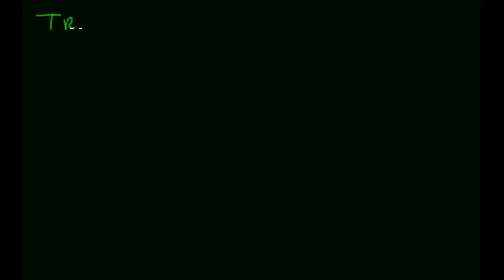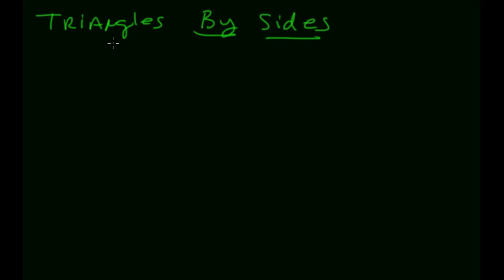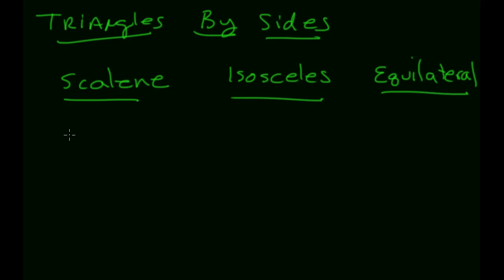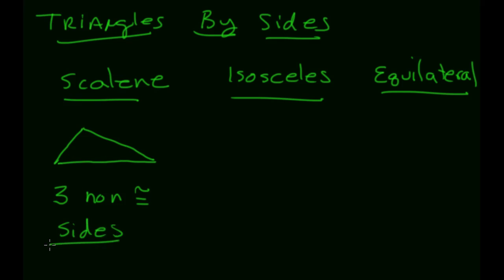We can also classify triangles by their sides. We get scalene triangles, isosceles triangles, and equilateral triangles. A scalene triangle has three non-congruent sides — all three sides are different lengths.